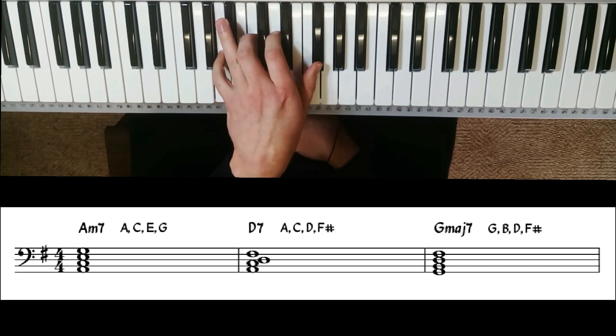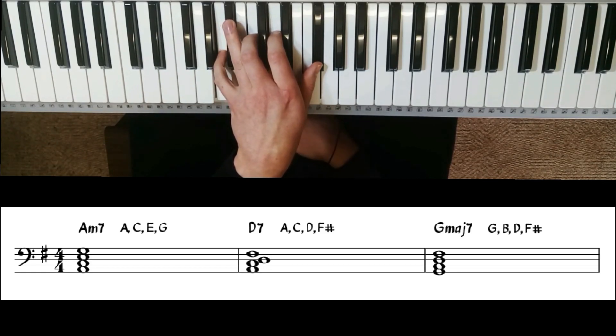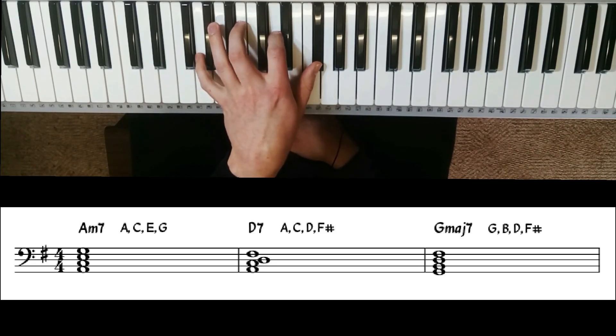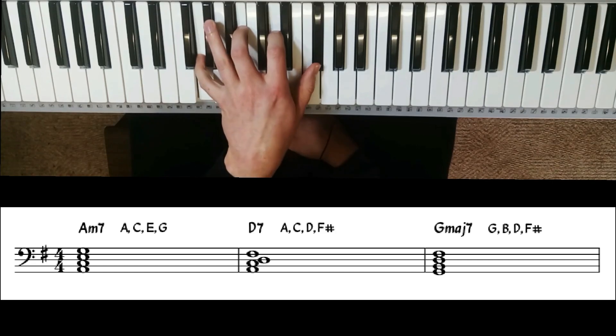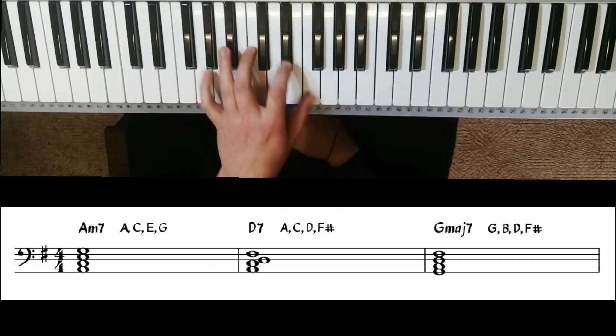There's our 5 chord. The same thing to go from the 5 chord to the 1 chord—we move the bottom two notes down. The A goes down to G, and the C goes down to B. There's our G major 7. Let's practice that a little bit.